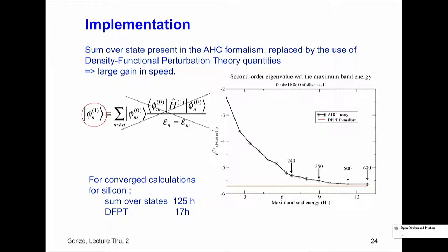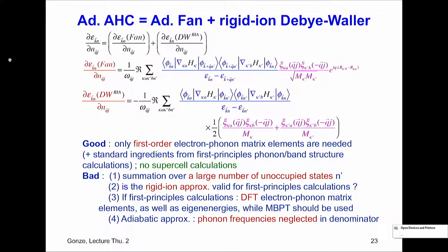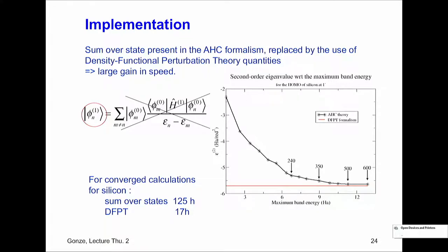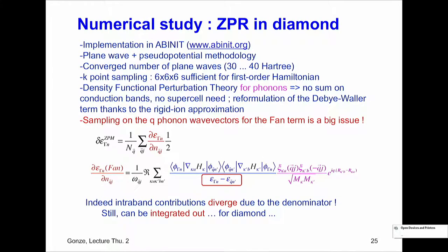One key point for efficient calculation is to remove completely the sum over empty states. This is implemented in Abinit using the Sternheimer rewriting of the Allen-Heine-Cardona theory — the only code that has this — bringing roughly an order of magnitude speedup with respect to a simple sum over matrix elements. We computed the zero-point normalization in diamond and then proceeded to the temperature dependence.